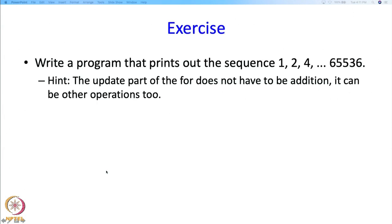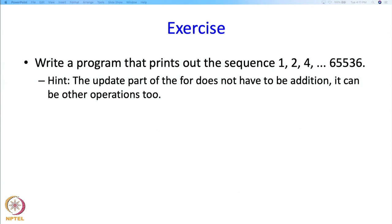Here is one exercise: suppose we indeed wrote int divisor equal to 2 inside the for initialization — what would this program do? That is something for you to think about. And here is one more exercise: write a for loop which prints out the sequence 1, 2, 4, all the way to 65536, which is 2 to the power of 16. The hint given is that the update part of the for does not have to be addition — it can be other operations like multiplication, for example.